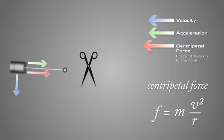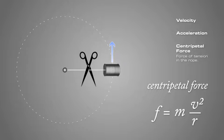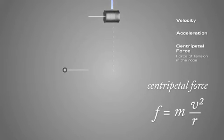If the rope is cut, the can will no longer maintain a circular path, and it will fly in a straight-line tangent due to Newton's first law of inertia.